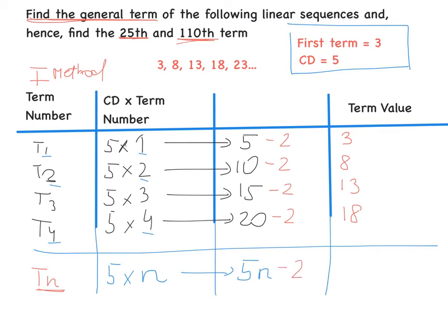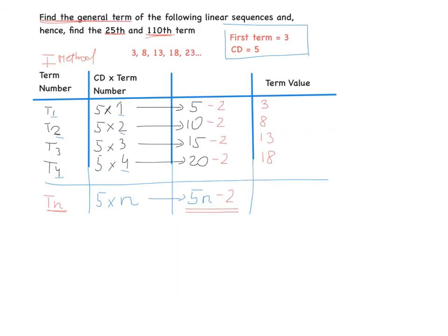And here we have the general rule — this is super important. Every single time you need to lay out a table, know what to put in each column, and figure out all these numbers. At the end we can find the general rule for the sequence. When we have the rule, we can find the 25th and 110th term. Our rule is: TN = 5N − 2.